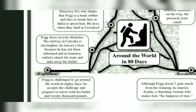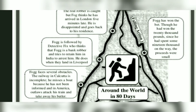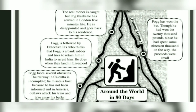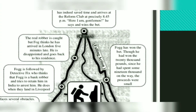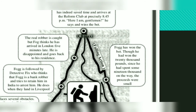In the rising action, Fogg faces several obstacles: the railway in Calcutta is incomplete, he misses a boat because he has not been informed, and in America outlaws attack his train and take away his butler Passepartout. Fogg is also followed by Detective Fix, who thinks that Fogg is a bank robber and tries to retain him in India to arrest him.